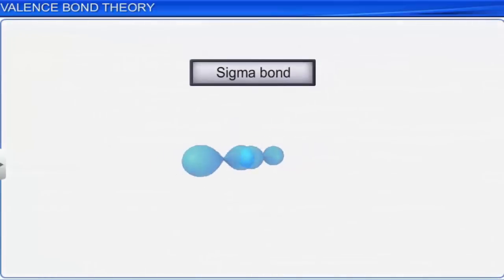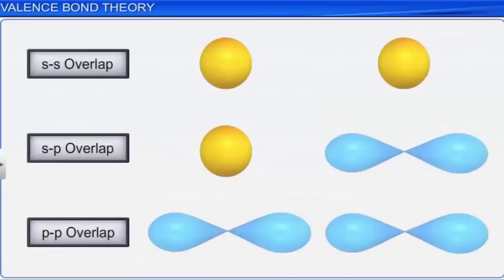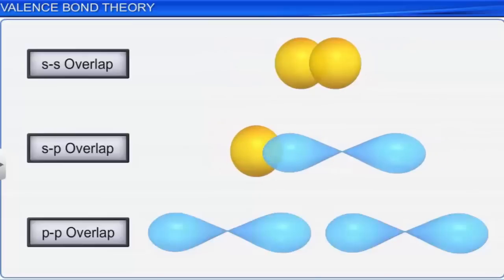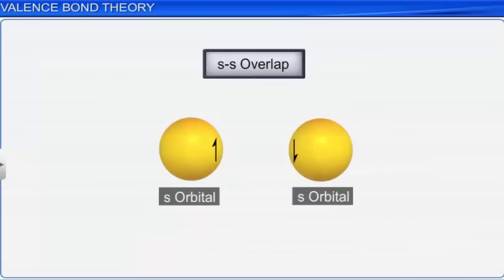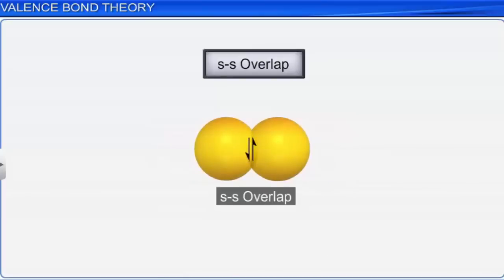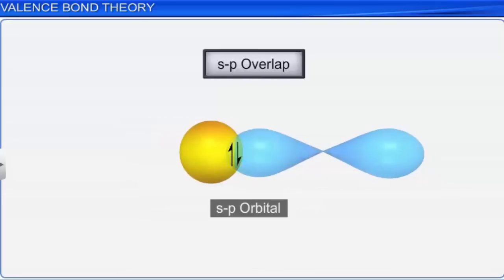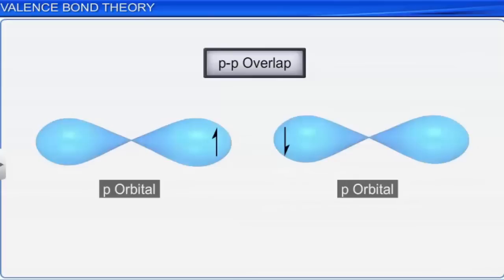Sigma bonds are formed by the end-to-end overlap of atomic orbitals along the internuclear axis, known as head-on or axial overlap. There are three types: SS overlap, SP overlap, and PP overlap. SS overlapping takes place when two half-filled S orbitals overlap along the internuclear axis. SP overlapping takes place when the half-filled S orbital of one atom overlaps with the half-filled P orbital of another atom. PP overlapping takes place between two half-filled P orbitals of two atoms along the internuclear axis.